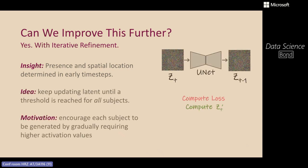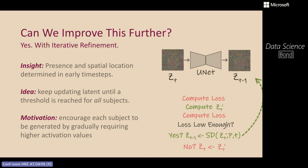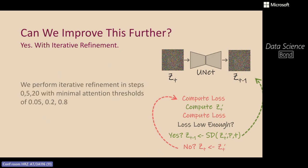If all subjects are attended to, we continue to the next generation step. If the loss is not low enough — say another subject is now neglected — we repeat the process and compute the loss again. This iterates until all subjects receive a high enough attention value. However, we don't want to shift ZT too much and go out of distribution, so we only apply iterative refinement in the early denoising steps: steps 0, 5, and 20 of the generation, since diffusion models determine subject locations in the first steps and fine details in the last.